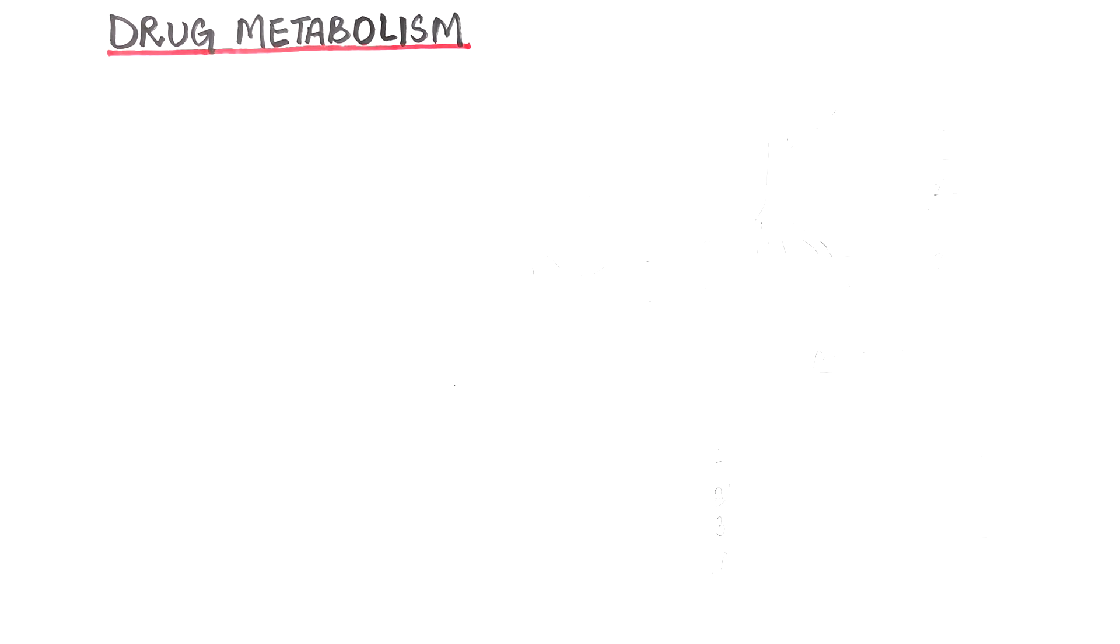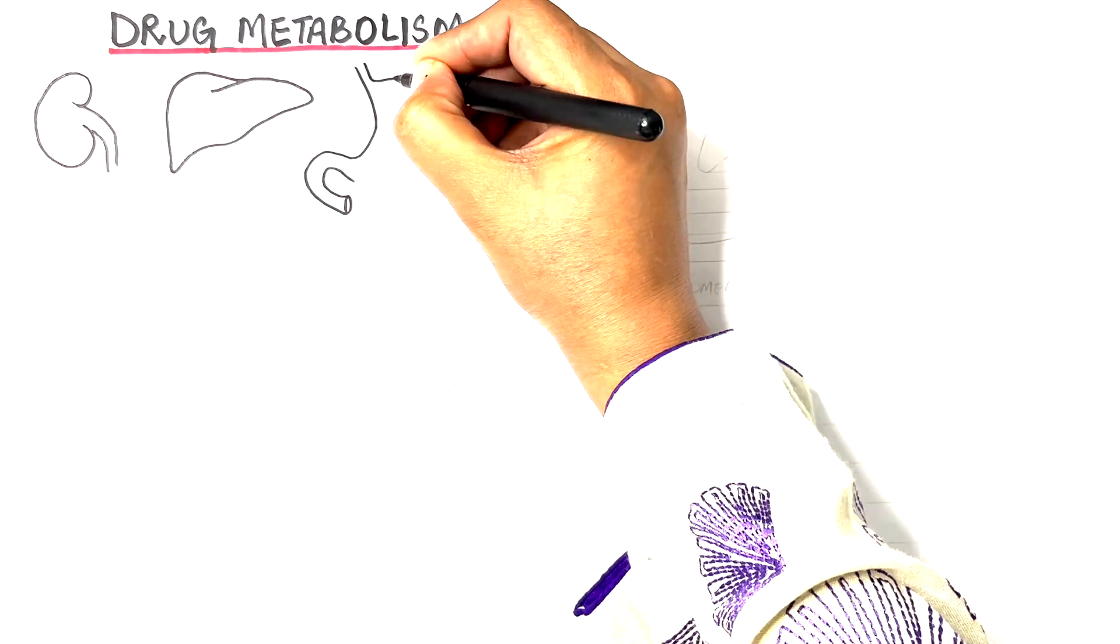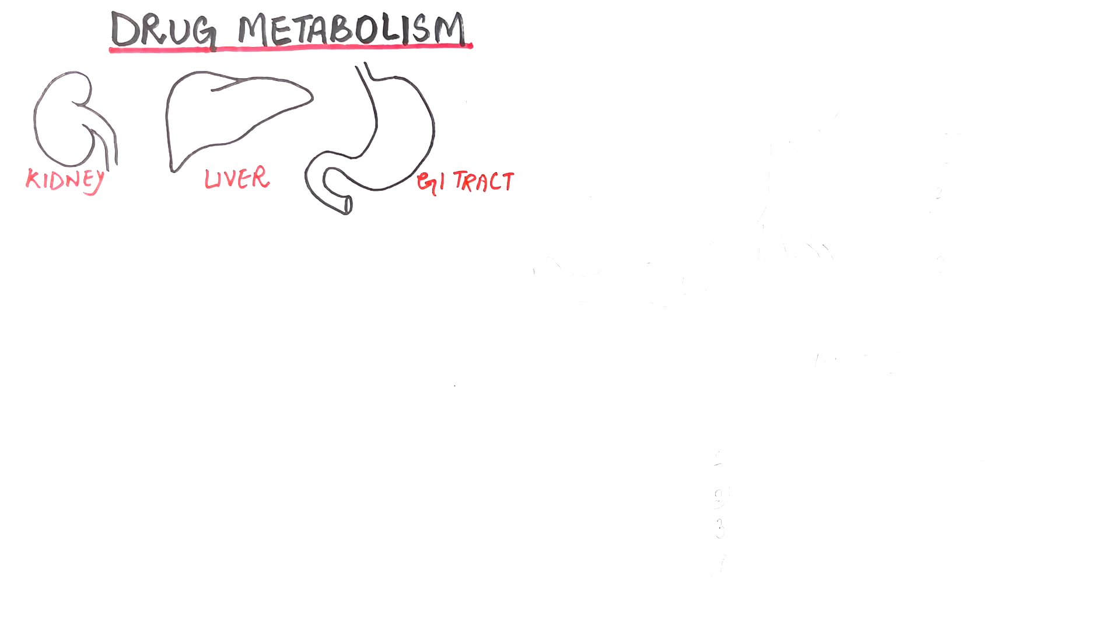Drug metabolism is accomplished by various body parts such as kidneys, liver, and the GI tract, with the liver being the primary and main organ for drug metabolism.